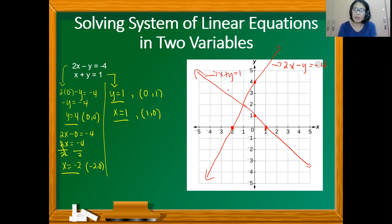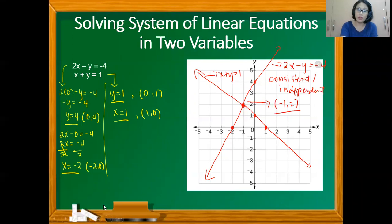As you can see, the two lines intersect, so we can say that the system is consistent and independent. The point of intersection is the solution, and the lines intersect at (−1, 2). So (−1, 2) is the solution for this system.